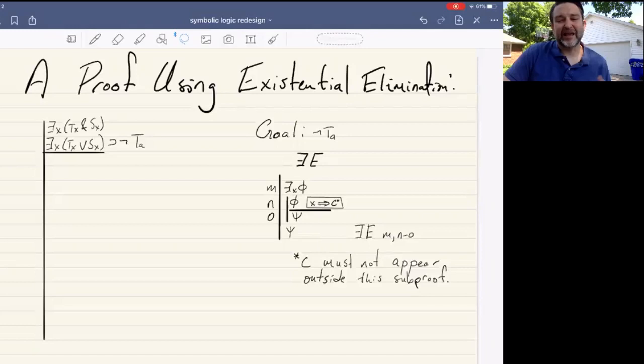So in existential elimination, what we do is we give a name to this object, and then we reason from the sentence thus generated to some conclusion. Within that conclusion, if the name is not included, then we may pull the conclusion that we've reached outside of the subproof in which we've substituted in the name C, for example, for the variable X.